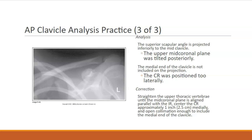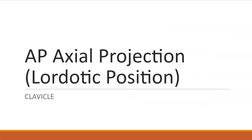In our last AP projection practice analysis of the clavicle, we first want to see if we have our anatomic structures. Evidently, we have clipped the medial clavicular end of the clavicle, so the central ray was positioned too laterally for this projection. Also, when looking for the superior angle of the scapula, it is projected inferior to the clavicle, indicating tilting issues — the patient was tilted posteriorly. We need to get that patient's mid-coronal plane parallel with the IR to correct this positioning error.